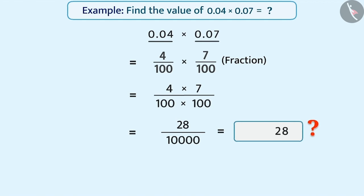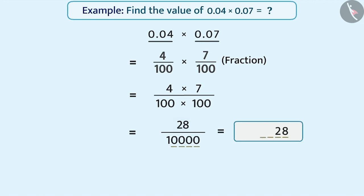Now, where should we place the decimal point? In 10,000, there are a total of 4 digits after 1. So we will place the decimal point in the numerator counting 4 places from the right. Since 2 places are empty, we will keep placeholder 0 at these places. Similarly, since the unit's place is also empty, we will place 0 there too.